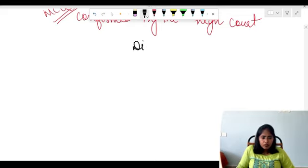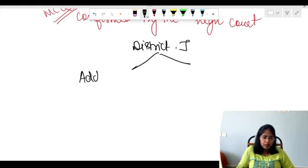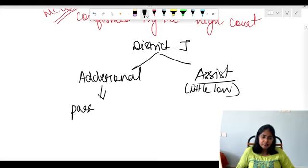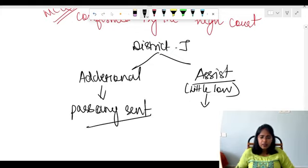The District Judge can be divided into Additional District Judge and Assistant District Judge. The Additional Judge can pass any sentence, the same as the District Judge. However, the Assistant Judge can pass only a sentence of up to 10 years imprisonment, but can give any amount of fine.